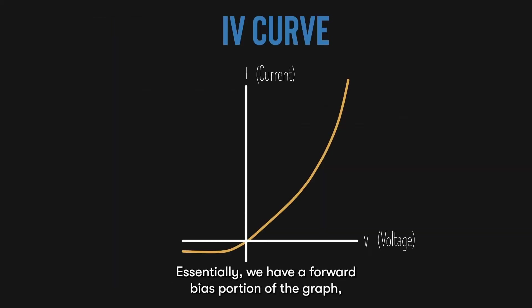Essentially, we have a forward bias portion of the graph, where the voltage is greater than zero. At this forward bias portion, the more we forward bias the diode, which is by increasing the voltage, the higher the current. So the current and voltage behave somewhat proportionally, with a little bit of deviation.